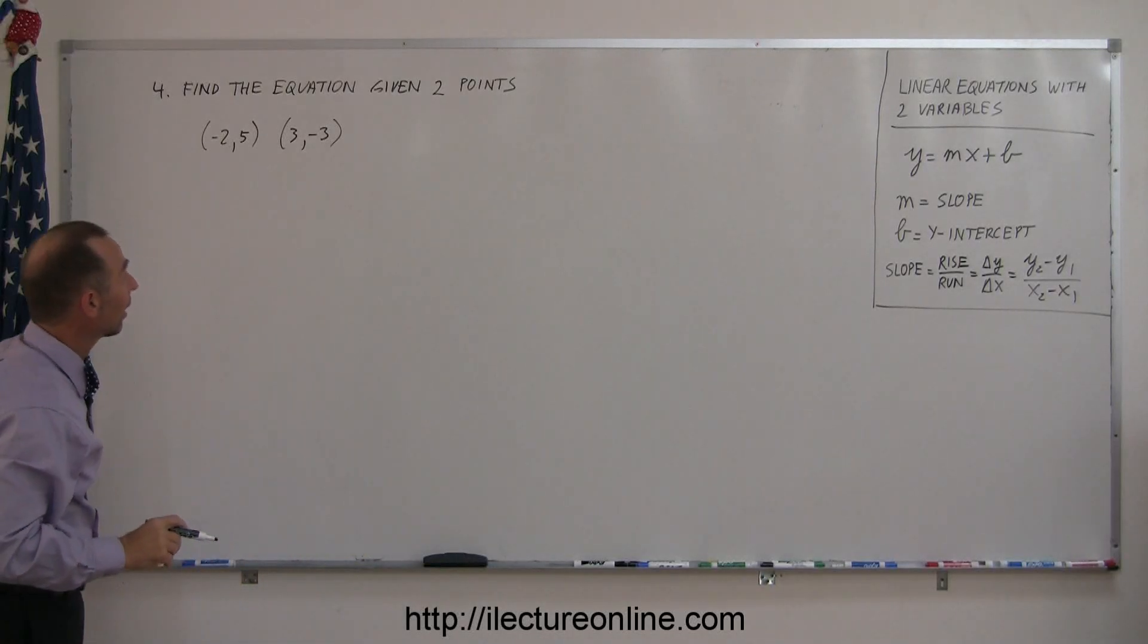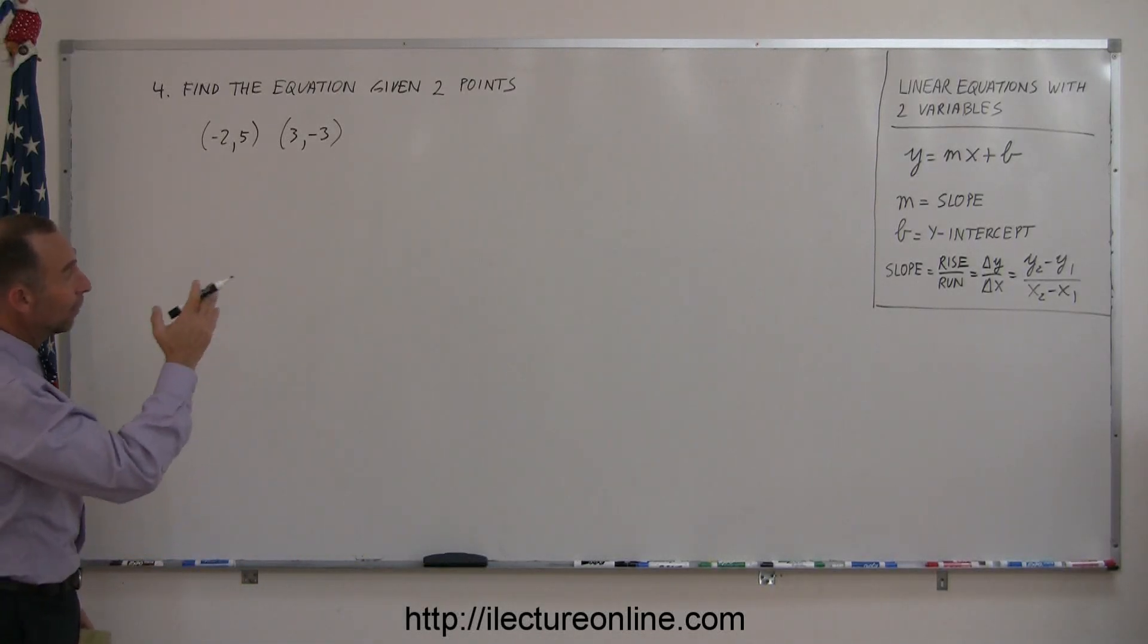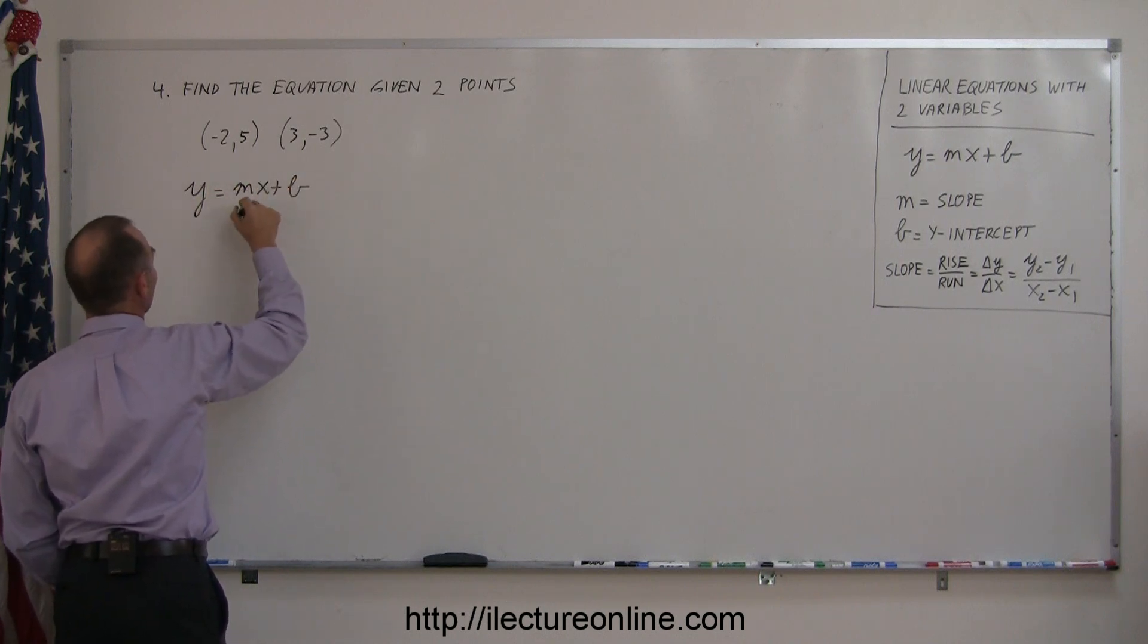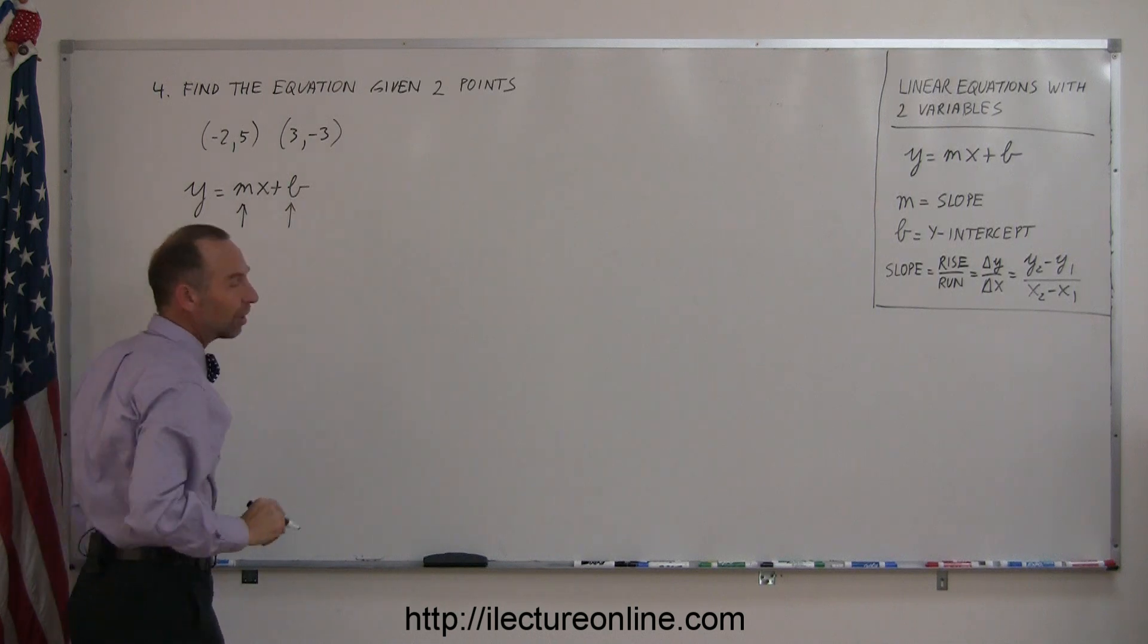We're supposed to find the equation of a line given two points. The equation needs to be in the form y = mx + b, which means I need to find the slope and the y-intercept.